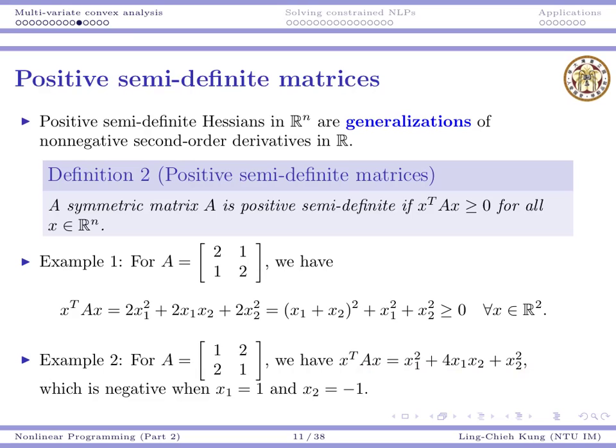For another matrix A, we have another x-transpose Ax. In this case, the expression may be negative. As long as we can find one example showing that the number is negative, that matrix is not positive semi-definite. Our example is x1 = 1 and x2 = -1. Plugging in, this gives 1, 1, and -4, so this matrix A is not positive semi-definite.